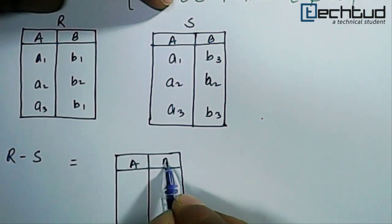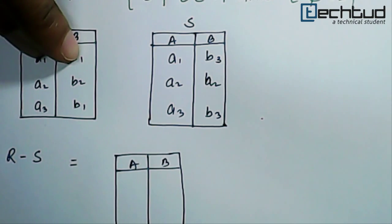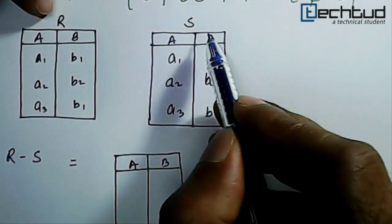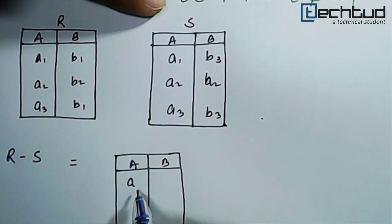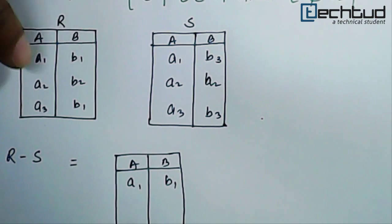Here we will see which row is present here in R but not present in S. A1 B1 of course it is present in R but not present in S. It will be A1 B1.